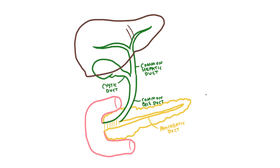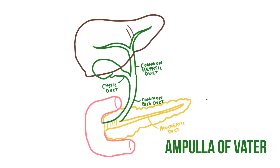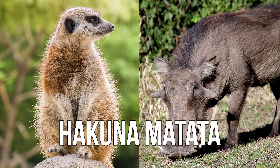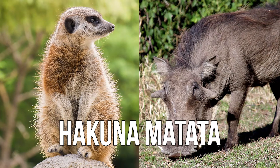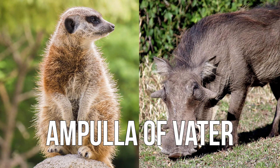Another name for this is the ampulla of Vater, which is way easier to remember, but only if you are a fan of The Lion King. You see, instead of singing Hakuna Matata, you can sing ampulla of Vater. What a wonderful duct.